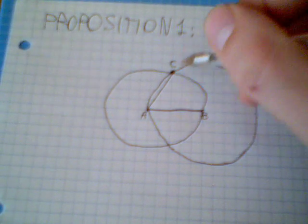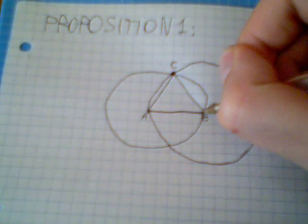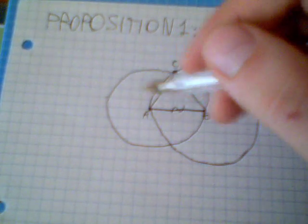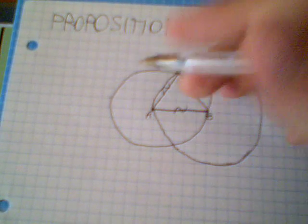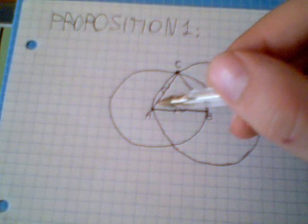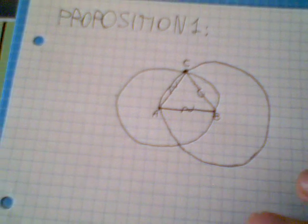I can join AC and CB. AB will be equal to AC because they are radii of this circle. And BA and BC will be equal to each other because they are radii of this circle. So all the sides of this triangle would be equal and this triangle would be equilateral.